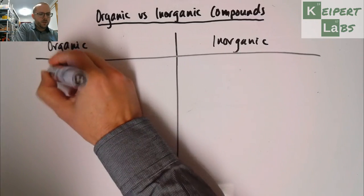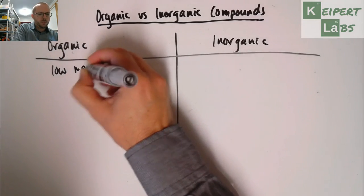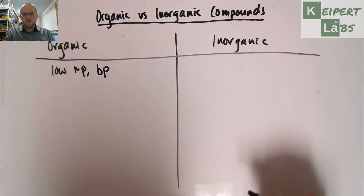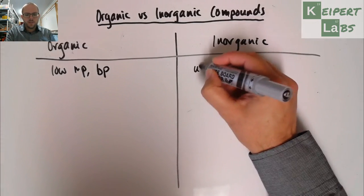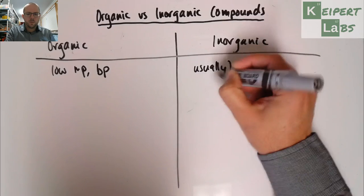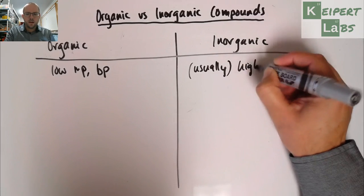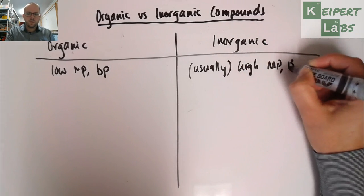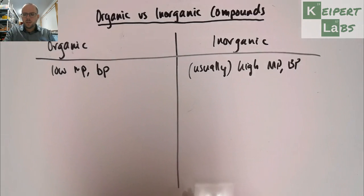With organic substances, we're typically thinking about low melting point or boiling point substances. Whereas, for inorganic, we're thinking about usually high melting point and boiling point, typically. And certainly by comparison here.